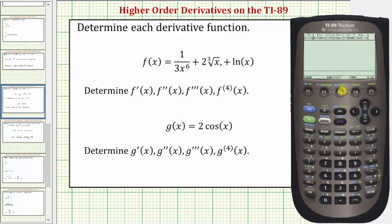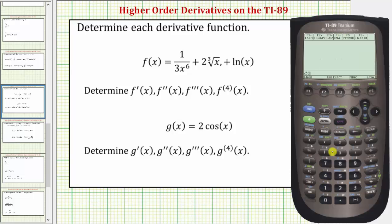Let's go ahead and press F3. Notice that differentiate is the first option, so we can press Enter or the number one. Now we enter the original function, which would be one divided by — we do need the 3x to the sixth in parentheses — so open parenthesis, 3x raised to the power of six, close parenthesis, plus two.